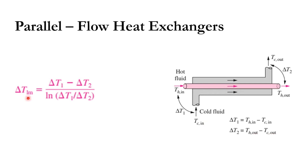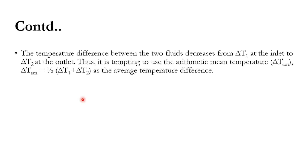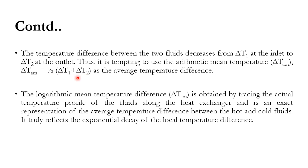The correlation for the log mean temperature difference is: ΔTlm = (ΔT1 − ΔT2) / ln(ΔT1/ΔT2). The temperature difference between the two fluids decreases from ΔT1 to ΔT2, and from the temperature profile chart, ΔT1 is higher and exponentially decreases to ΔT2. One approach is to take the arithmetic mean temperature difference: ΔTam = (ΔT1 + ΔT2)/2. However, the logarithmic mean temperature difference gives a clearer picture by tracing the actual temperature profile along the exchanger length and is an exact representation of the average temperature difference between hot and cold fluids.